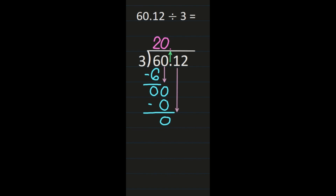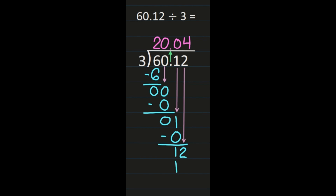So I'm bringing down the 1, and because I'm bringing a number down I start all those steps again. 1 divided by 3 is 0. That 0 goes above the 1. 0 times 3 is 0. I subtract — 1 minus 0 is 1. Then if I have anything left to bring down, I bring it down — I do, I have the 2. So I'm going to bring the 2 down and start all of those steps again. 12 divided by 3 is 4. 4 times 3 is 12 — so I've divided, I've multiplied. Now I subtract — 12 minus 12 is 0.